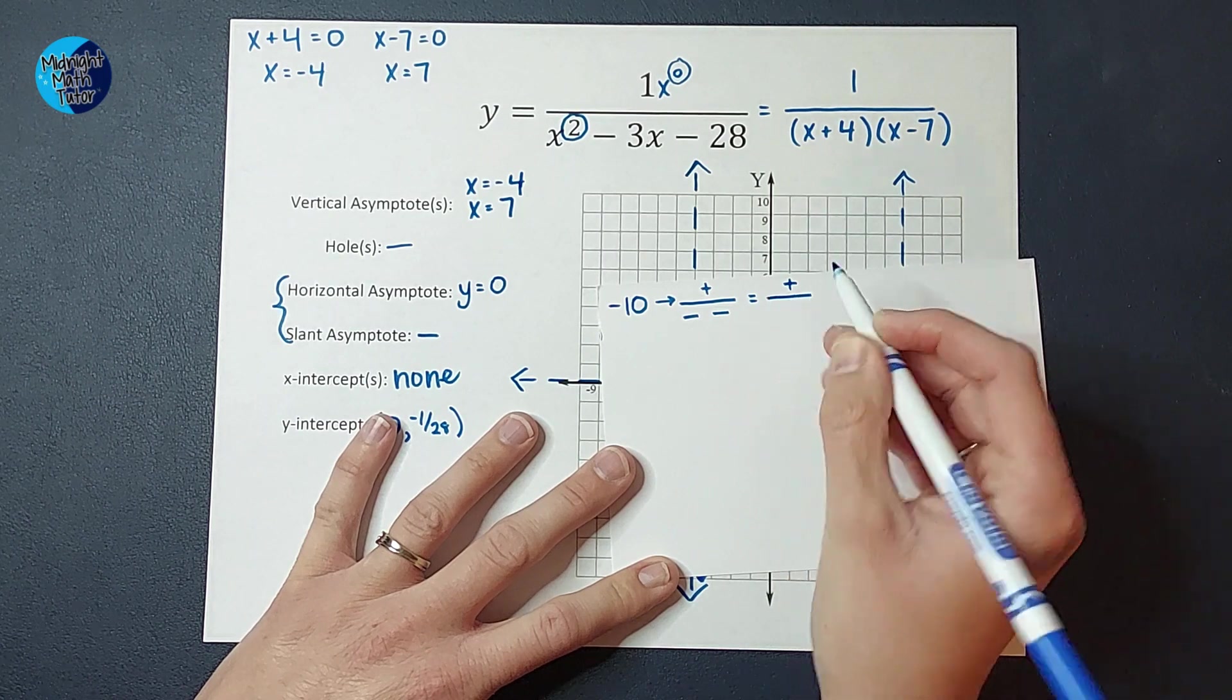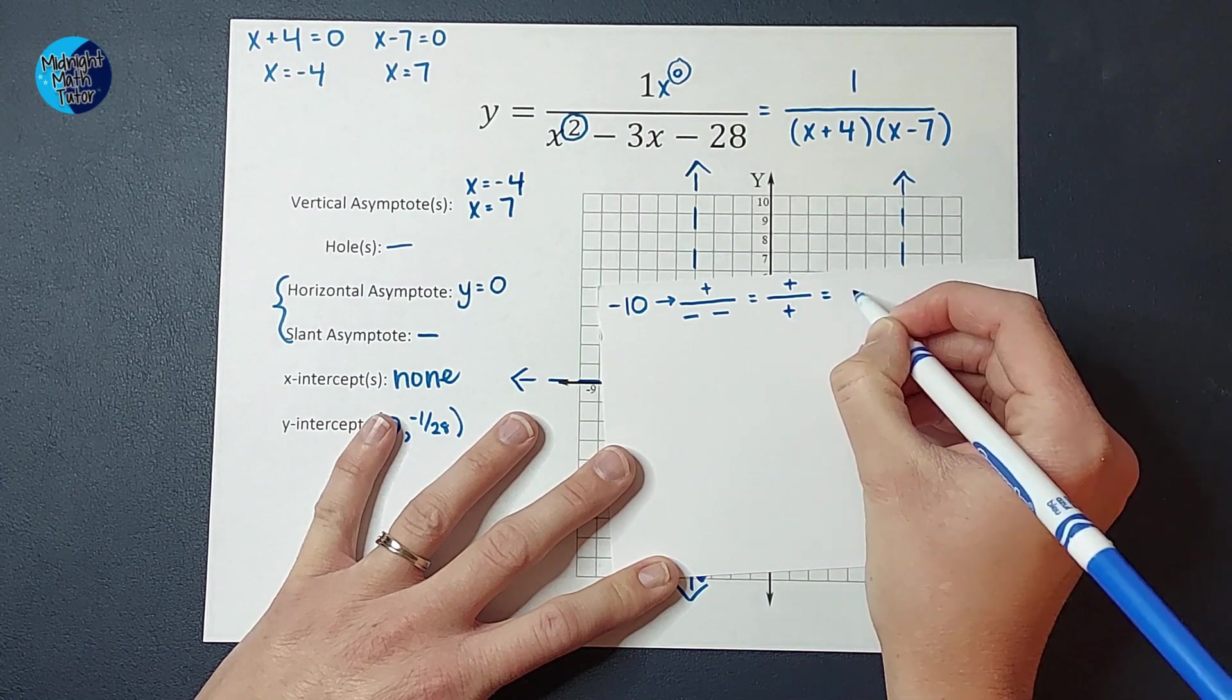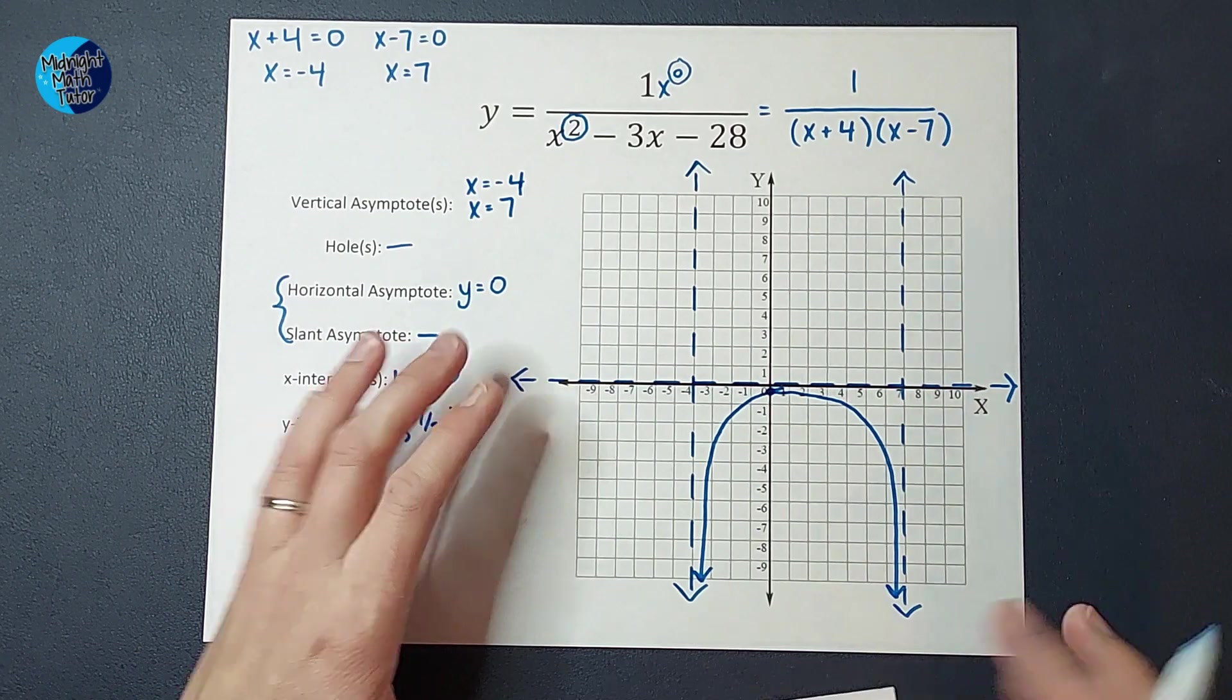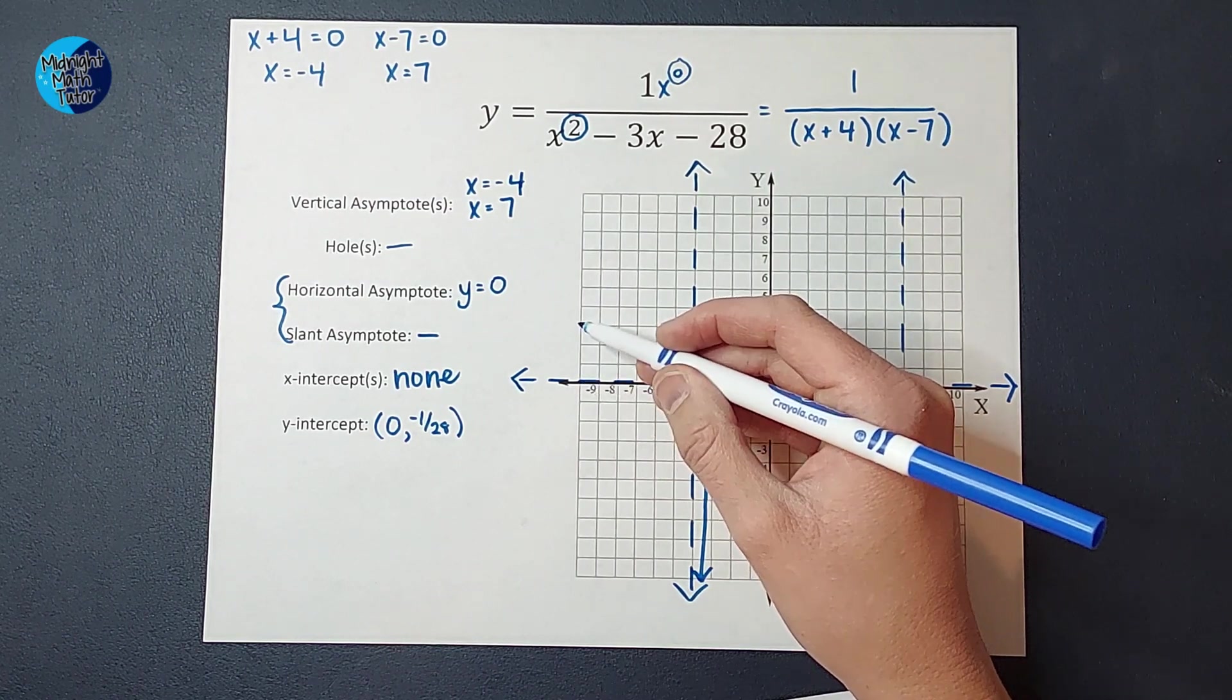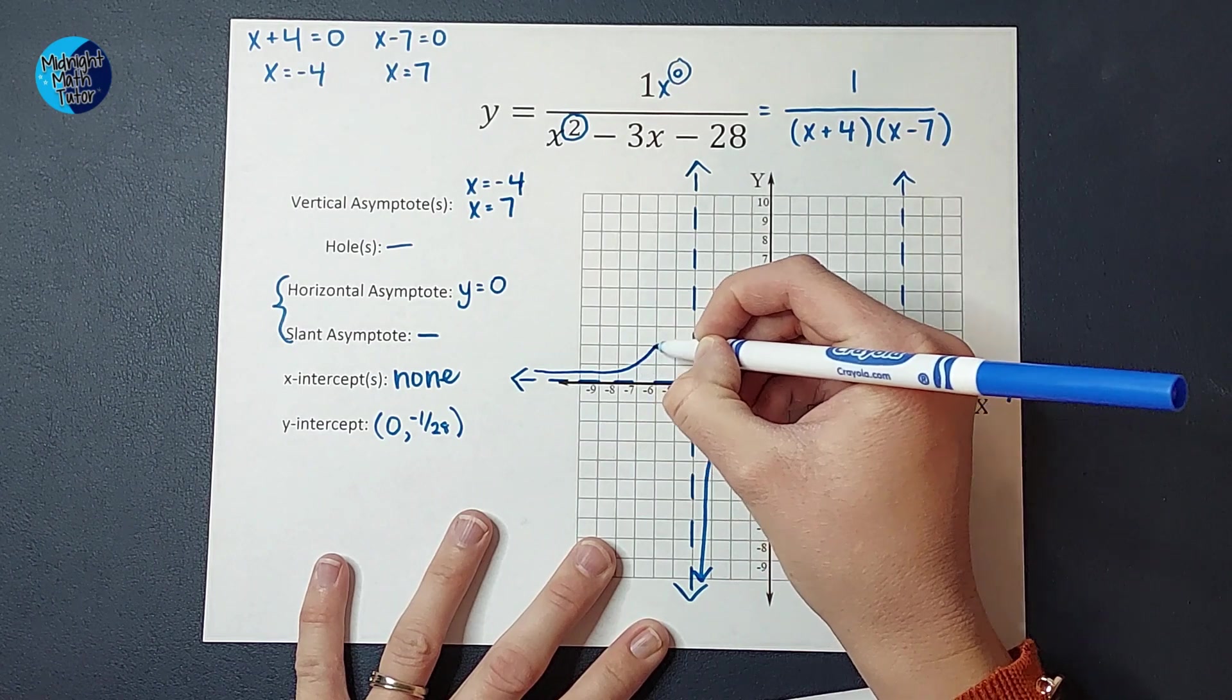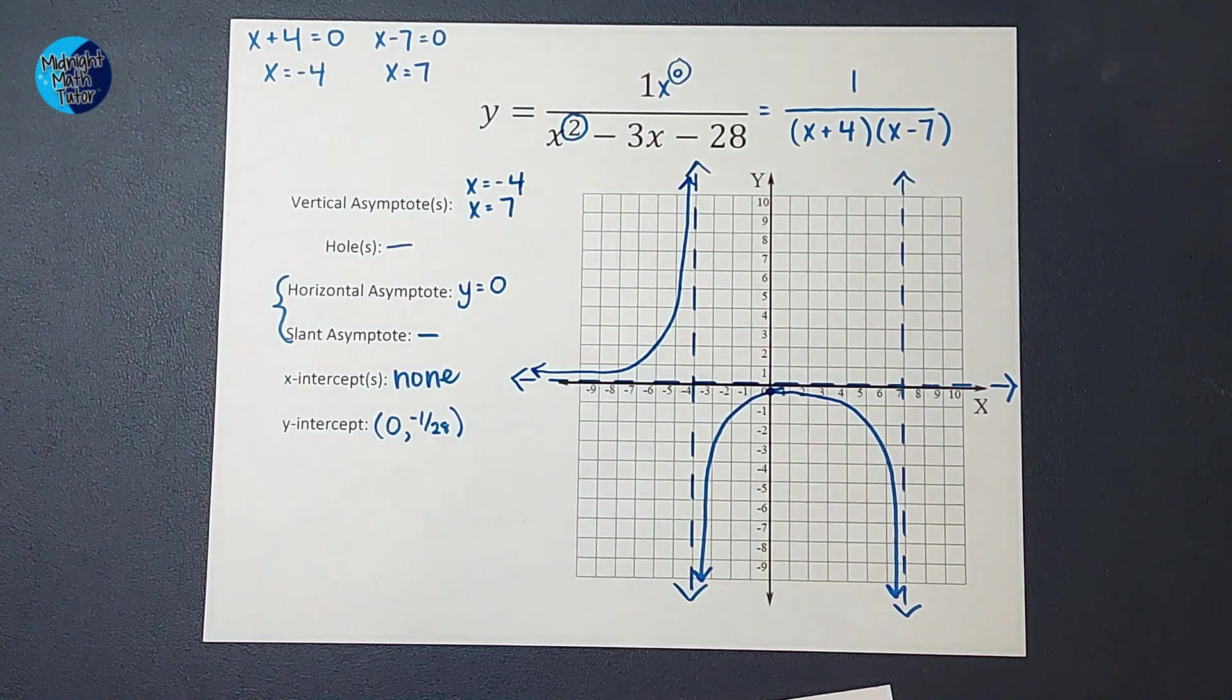So, on top, I would still have a positive. On bottom, I would have a negative times a negative, which would give me a positive. And a positive divided by a positive gives me a positive. So, when I plug in negative 10, I don't know the exact number. I could figure it out if I wanted to. But I know the answer is positive. So, I know that my graph is going to hug these asymptotes in the positive region of my graph. All right.